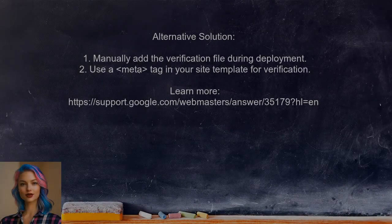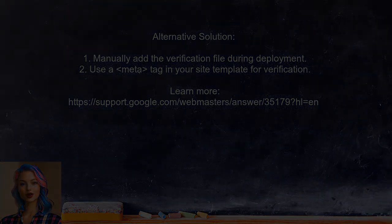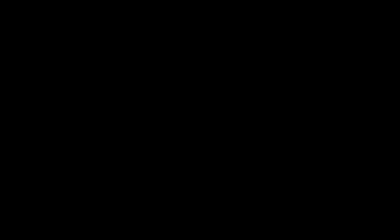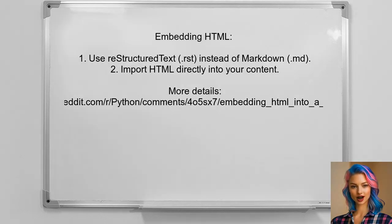Another alternative solution for hosting raw HTML pages in a Pelican static website is to manually add the verification file when you push your generated content. Alternatively, you can include a meta tag in your site template for Google site verification. For embedding HTML into your Pelican site, consider using reStructuredText instead of Markdown, as this allows you to import HTML directly into your content.